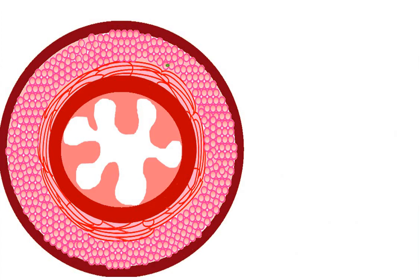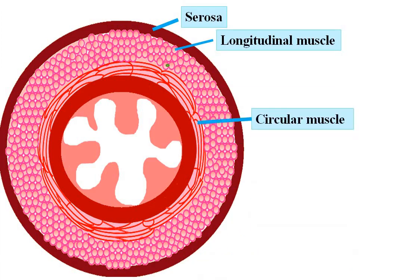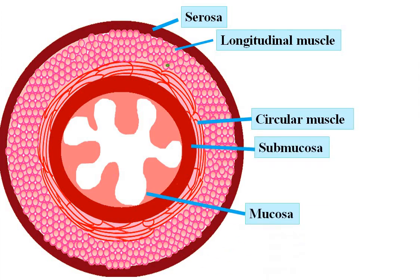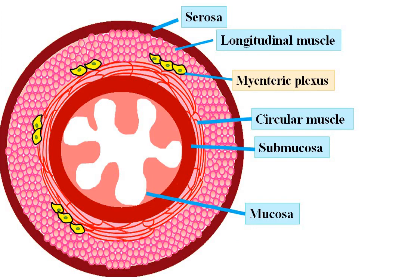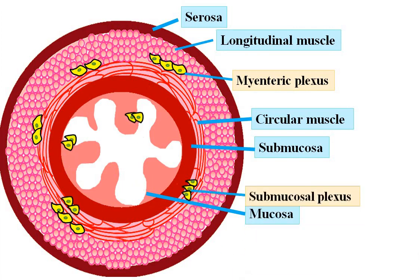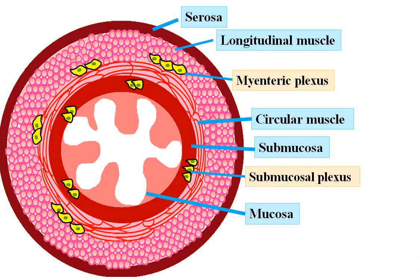The gastrointestinal tract is composed of serosa, the longitudinal muscle, the circular muscle, submucosa, and mucosa. The myenteric plexus of the enteric nervous system is located between the longitudinal muscle and the circular muscle layer. While the submucosal plexus of the enteric nervous system is present in the submucosa.